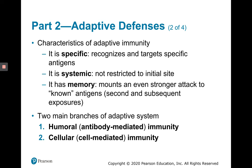Other characteristics of the adaptive immune system, other than that it's specific, is that it's systemic — it's not restricted to the initial site. It has memory, and it mounts an even stronger attack to known antigens. There are two main branches of the adaptive defense system: the humoral and cellular arms.